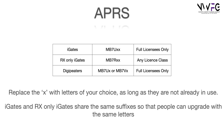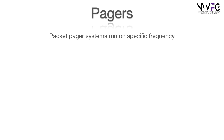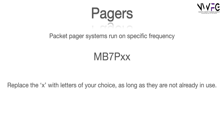There is a slight caveat to this because iGates and receive-only iGates share the same suffixes so that people can upgrade with the same letters. So for example, if you have a receive-only iGate of MB7RXX, you would want that to be available when you move to an iGate, and you would then become MB7UXX, but at least you would keep the two letters of your choice. Packet pager systems run on a specific frequency, all starting MB7P with two letters. You can replace the X with letters of your choice as long as they're not already in use, and these can be kept by full licensees only.